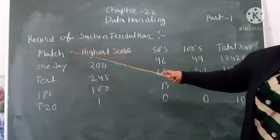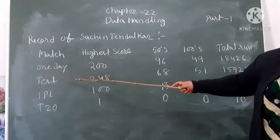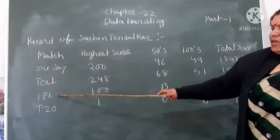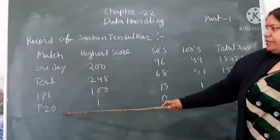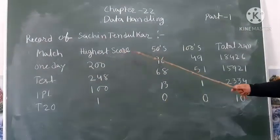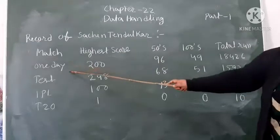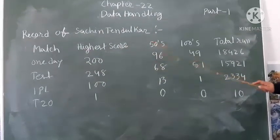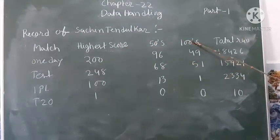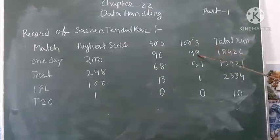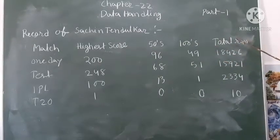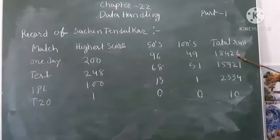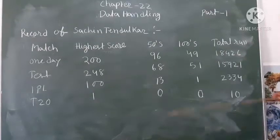His number of matches: One Day, Test, IPL, T20. Highest score in One Day: 200. Centuries: 49, and total runs: 80,226.